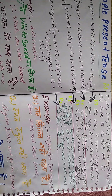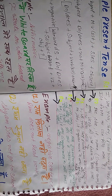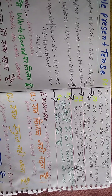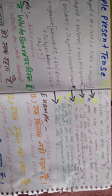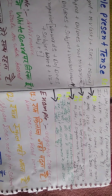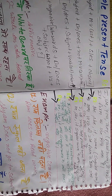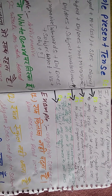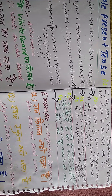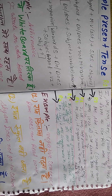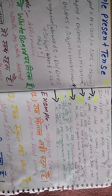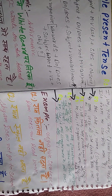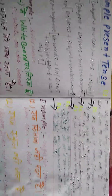Interrogative. Rule number 1: I, We, You, They तथा plural nouns के आगे 'do' का use करते हैं और अंत में प्रश्नवाचक चिन्ह का प्रयोग होगा. Rule number 2: He, She, It तथा singular nouns के आगे 'does' का प्रयोग करते हैं.